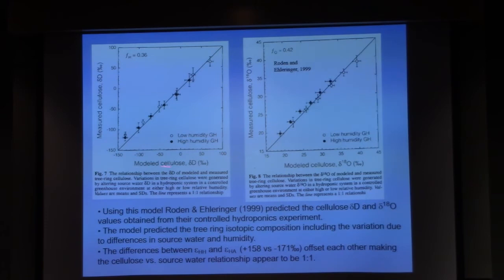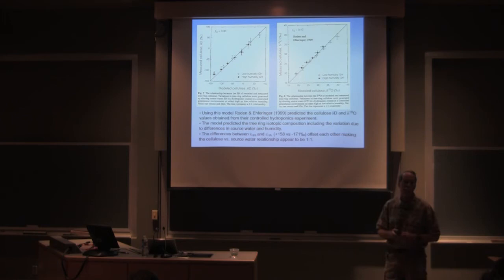So this is what the model predicts the delta deuterium content would be. This is what the measured cellulose was, modeled 18-O, measured 18-O. Those lines are one-to-one relationships.